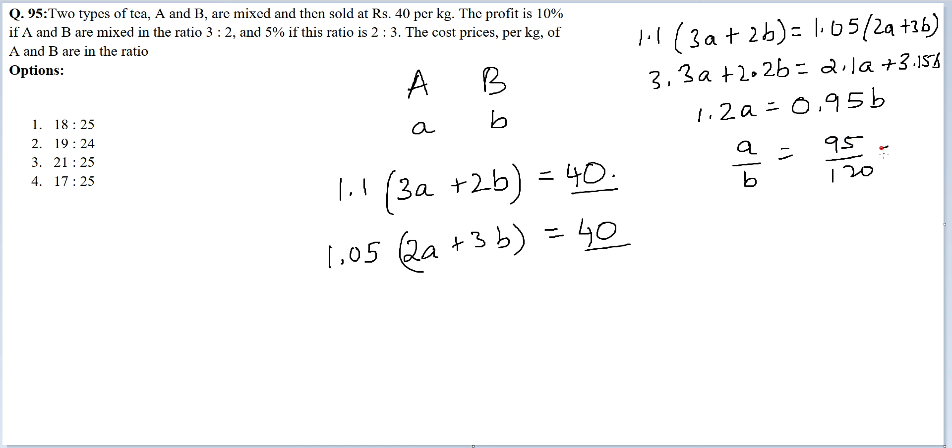You can take 5 common and then you get 19/24, which should be the answer to this question. Therefore, the ratio of prices of A and B is 19:24.